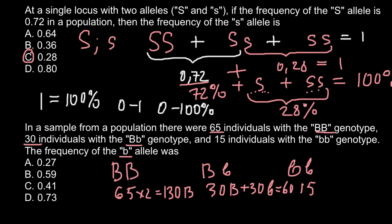So that gives us 30 capital B alleles from the heterozygous individuals. For the homozygous recessive group, we have 15 individuals, each with two small b alleles, so together they have 30 recessive small b alleles. So we have 30 small b alleles from the heterozygous individuals and 30 small b alleles from the homozygous recessive individuals.